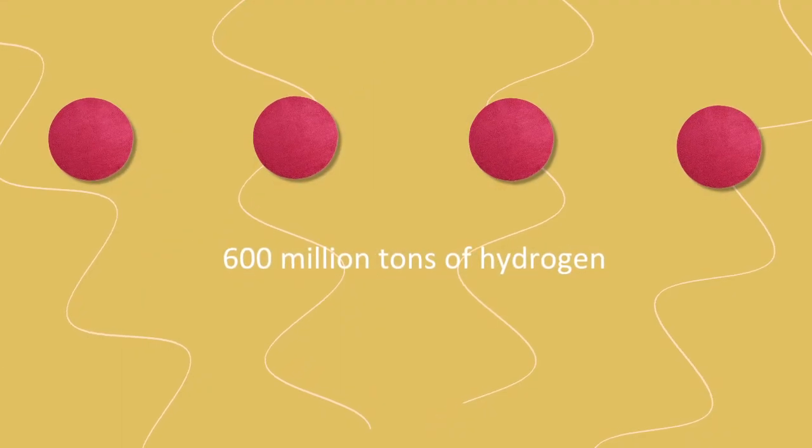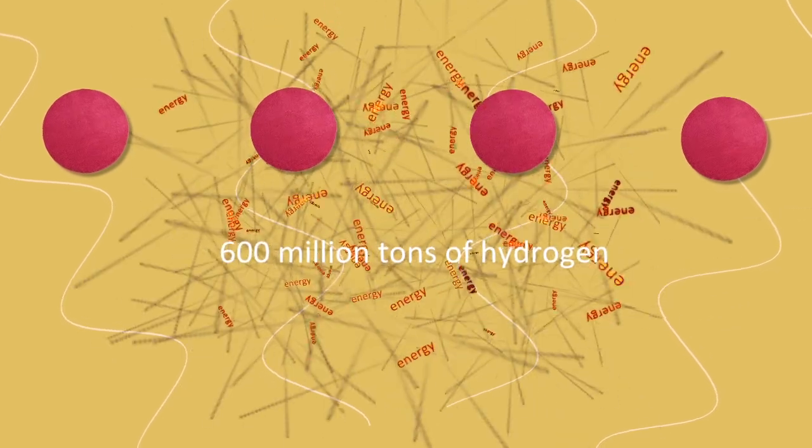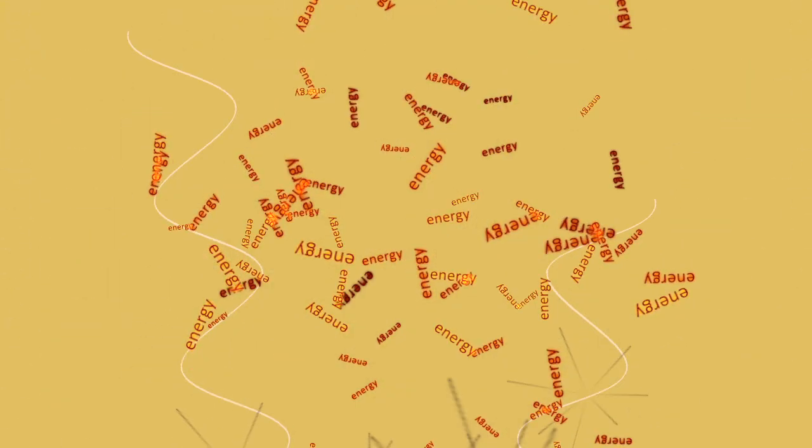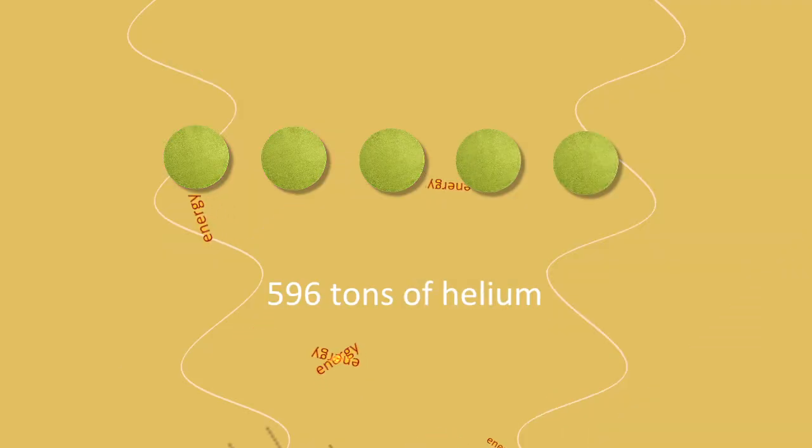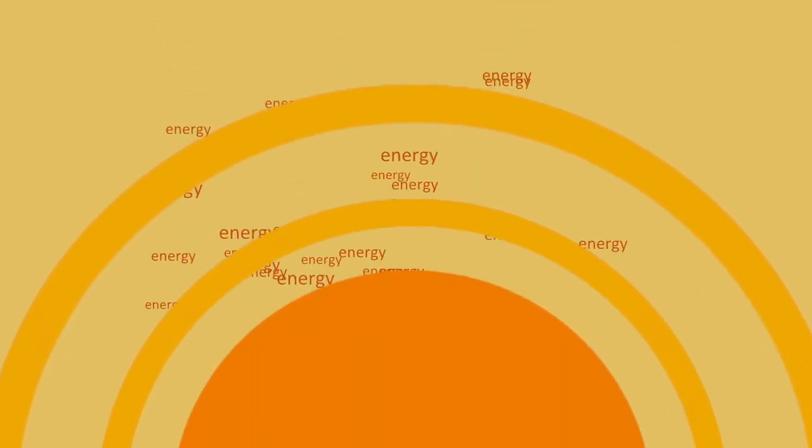It's estimated that 600 million tons of hydrogen are fused into 596 million tons of helium every second. 4 million tons of that mass is converted into energy.